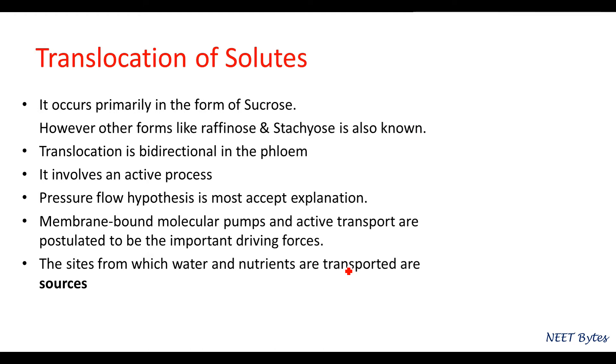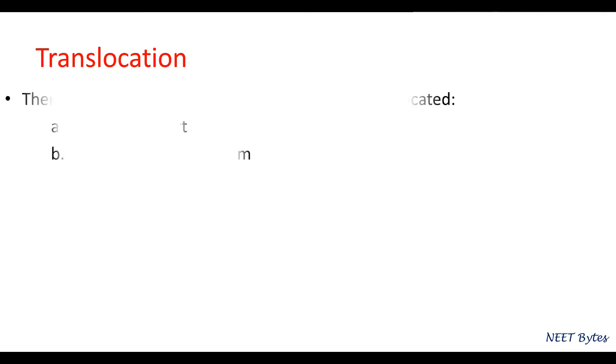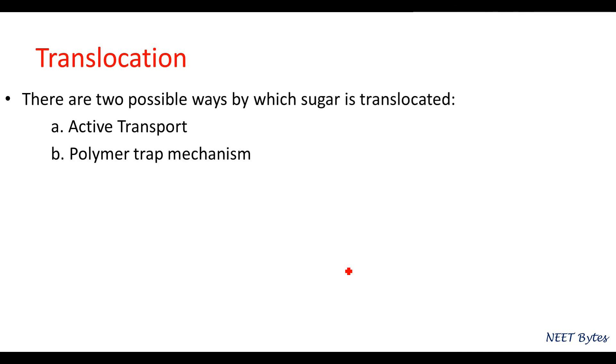There are two possible ways by which solute is translocated: active transport and polymer trap mechanism. Sugars are actively transported into sieve elements; here energy is involved. But in some species, phloem is loaded by polymer trap mechanism.